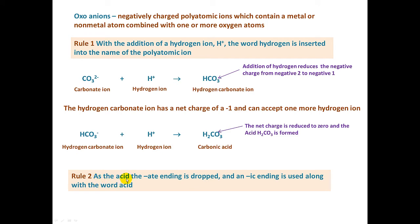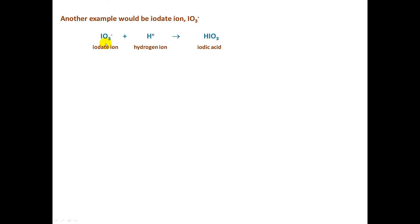Rule number two: as the acid, the -ate ending is dropped. So for carbonate, we drop the hydrogen and drop the -ate, then add an -ic ending with the word acid — giving us carbonic acid. Here's another example: the iodate ion, when hydrogen is added, becomes iodic acid. We drop the -ate, add -ic, and the word acid. When the hydrogen was added, the charge was reduced by one, giving us an uncharged species — the acid, iodic acid.